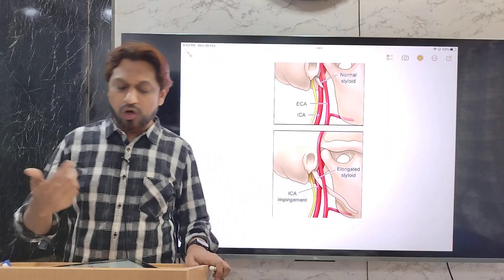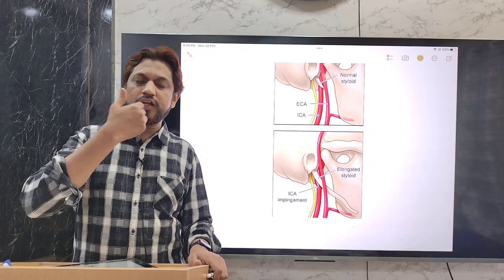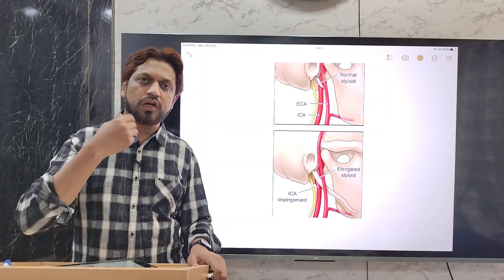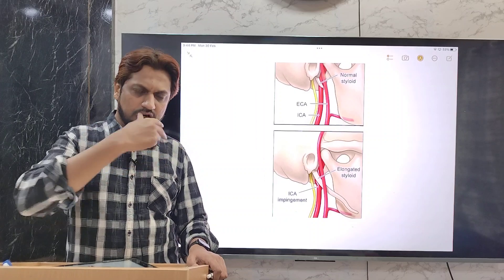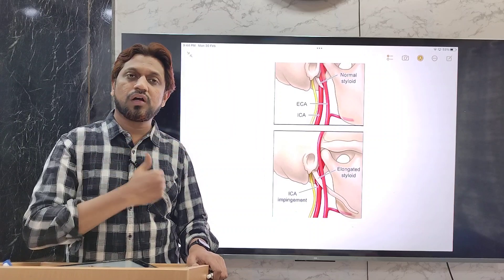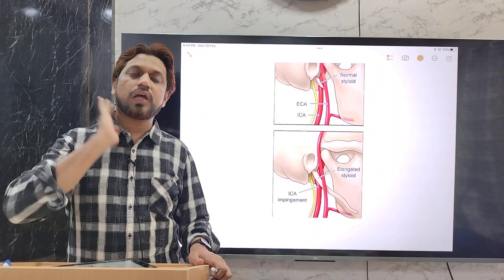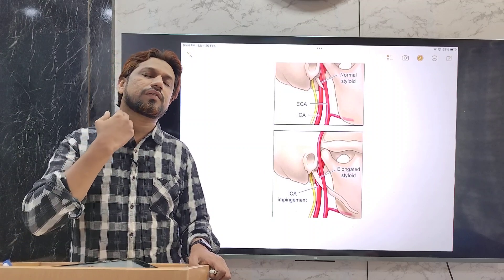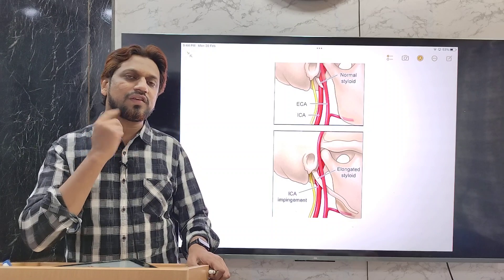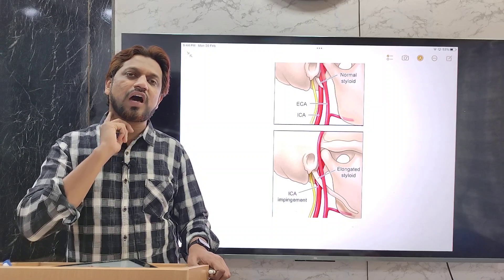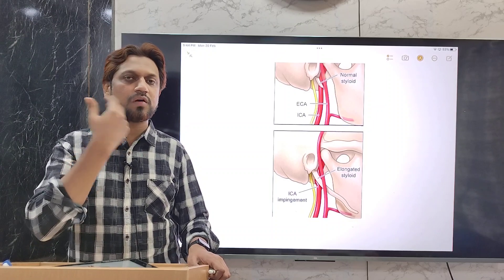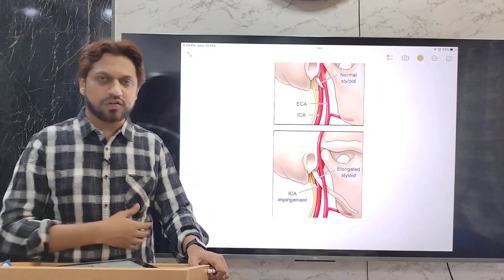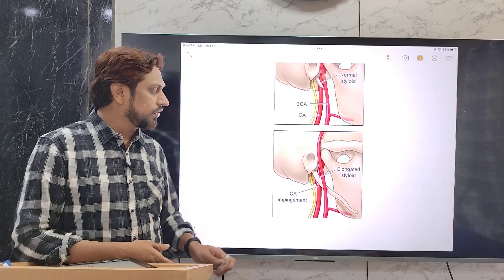There are two routes or two approaches for this. Directly through the intraoral route, tonsil has to be removed and from the tonsillar bed, this styloid process extra is excised. Or from the outside, that is, cervical approach where the surgical access is easy. But there is a chance of the scar formation, scar tissue is visible as compared to the oral route, intraoral route. And nowadays, endoscopy procedures are also available for this.